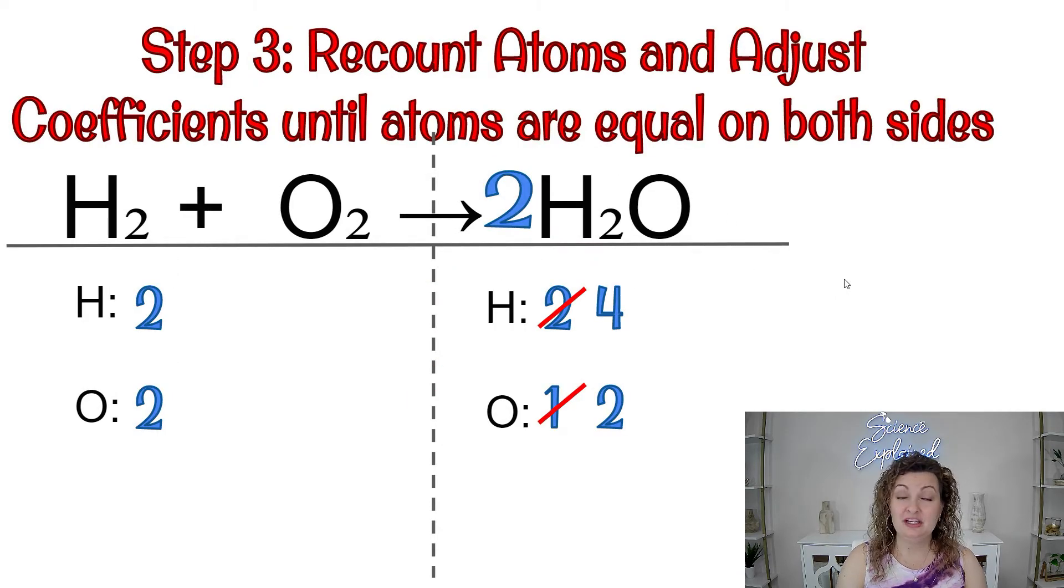Now we're going to go to step three, and this is our last step. We're going to recount the atoms and adjust coefficients until atoms are equal on both sides. So let's see what we have so far. We have two hydrogen and four hydrogen, so that is not balanced, two oxygen and two oxygen, and that one is balanced.